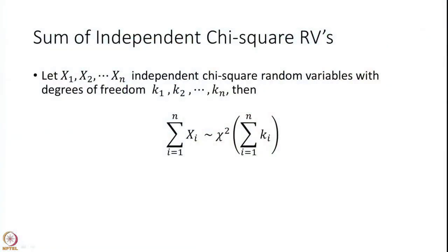Next, if x1, x2, ..., xn are independent chi-square random variables with degrees of freedom k1, k2, ..., kn, then their sum is also chi-square with degrees of freedom equal to the sum of the individual degrees of freedom. This should be obvious because a chi-square distribution with k degrees of freedom is itself defined as a sum of squares of standard normal random variables, so the additive nature of independent chi-square random variables follows naturally.